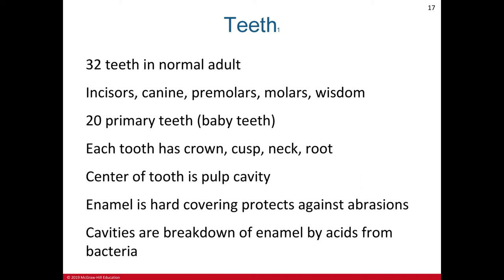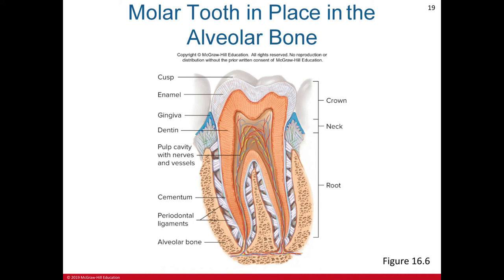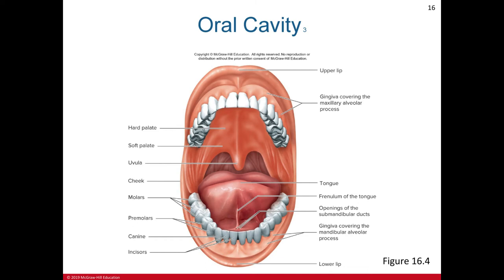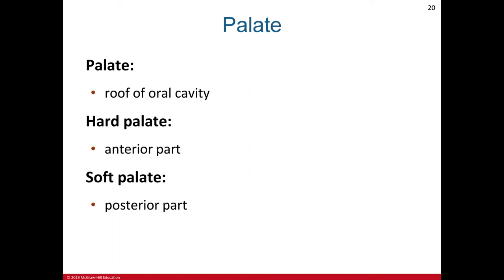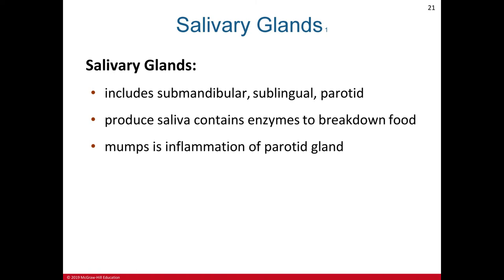The teeth: a normal adult has 32 teeth — incisors, canines, premolars, molars, and wisdom teeth — preceded by 20 primary or baby teeth. Each tooth has a crown, neck, and root; the center contains the pulp cavity, and enamel is the hard covering protecting against abrasion. Cavities are caused by breakdown of enamel by acid from bacteria. The palate is the roof of the oral cavity — the hard palate is anterior and the soft palate is posterior, near the uvula.